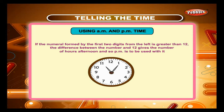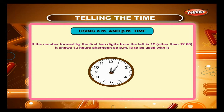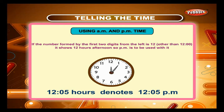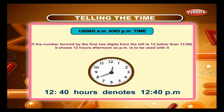Rule 5: If the first two digits from the left are greater than 12, the difference between that number and 12 gives the number of hours after noon, so PM is used. For example, 1315 hours denotes 1:15 PM, and 2230 hours denotes 10:30 PM. Rule 6: If the first two digits from the left equal 12 (other than 1200), it shows 12 hours afternoon, so PM is used. For example, 1205 hours denotes 12:05 PM, and 1240 hours denotes 12:40 PM.